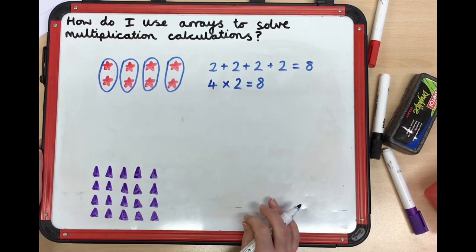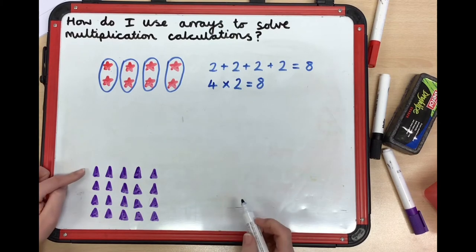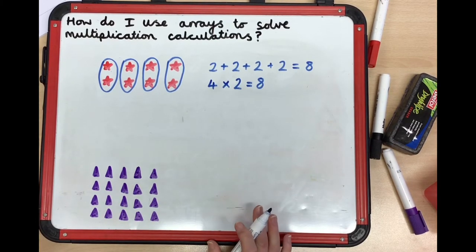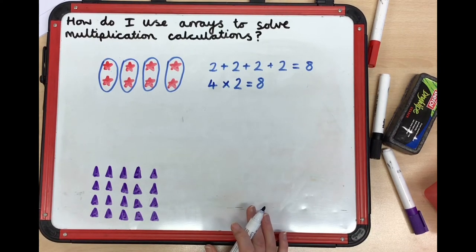Let's look at the array down here with the purple triangles. See if you can pause the video now, before I go through the repeated addition and the multiplication, and see if you can work it out yourself.